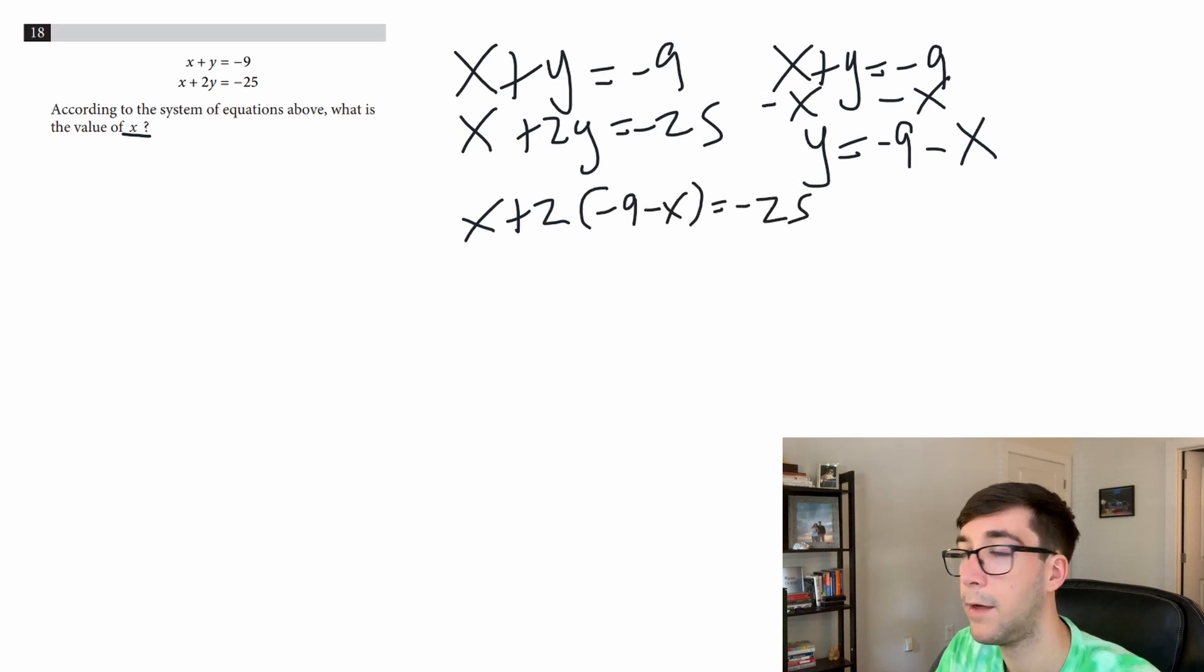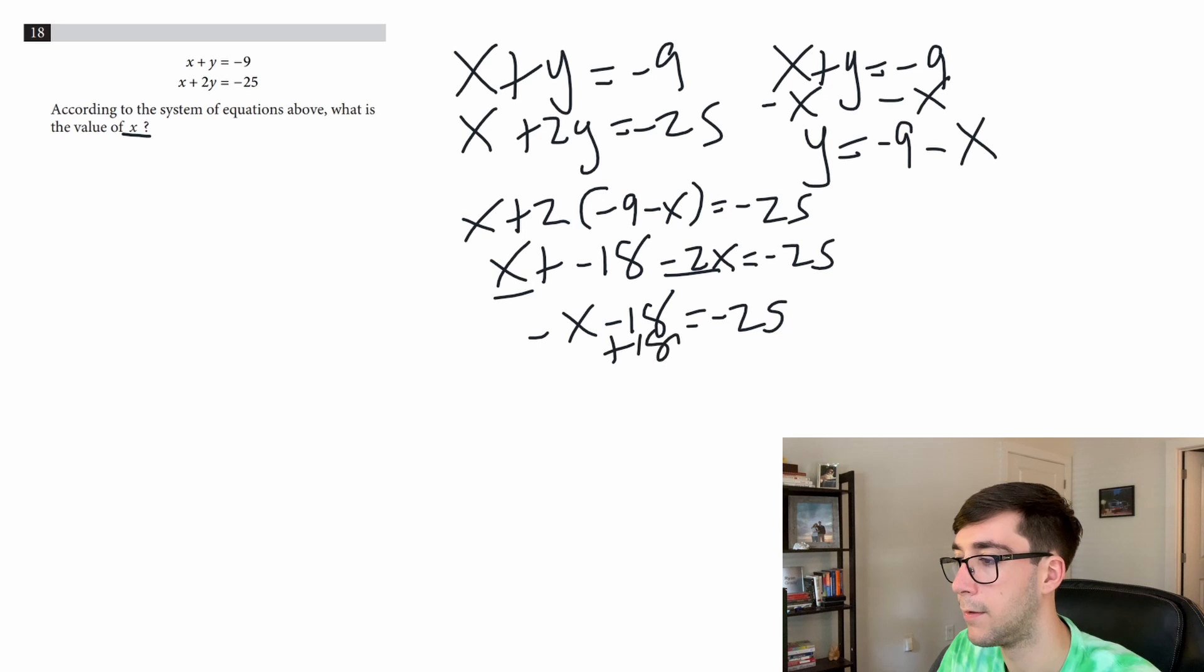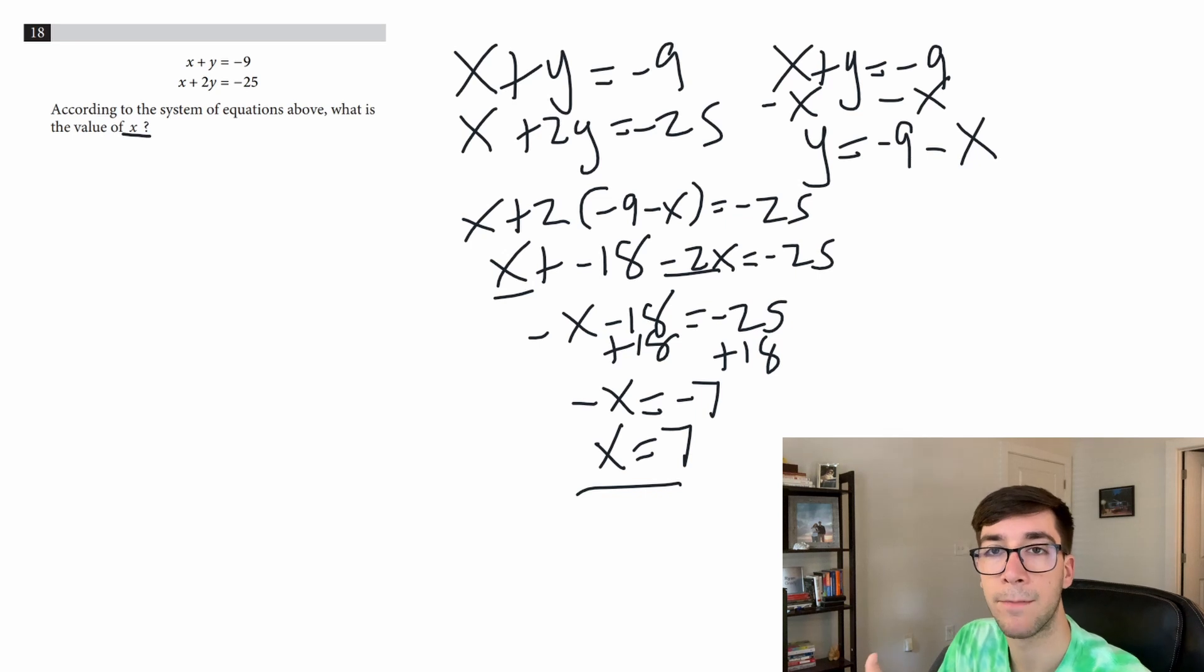From here we can solve it like a normal equation. So do x plus distribute the 2: negative 18 minus 2x equals negative 25. Let's group the like variables, we get negative x minus 18 equals negative 25. Add 18 to both sides, negative x equals negative 7, and we want positive x so positive x is going to be positive 7 and that's our answer.